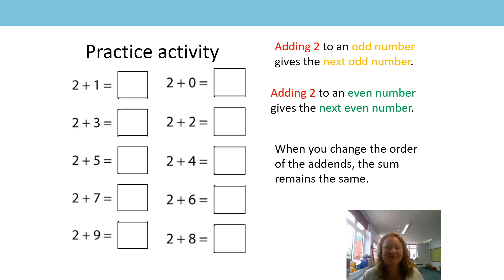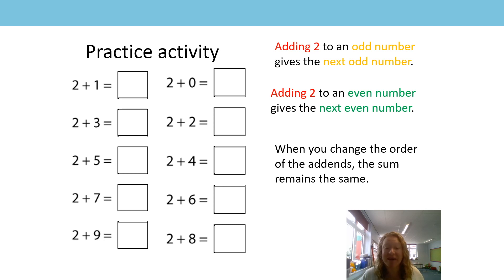Hi everyone, how did you get on with the practice activity? Good, we needed those generalizations, didn't we? Should we just go over them before we look at the answers? So: adding two to an odd number gives the next odd number; adding two to an even number gives the next even number; and this important one — when you change the order of the addends, the sum remains the same.